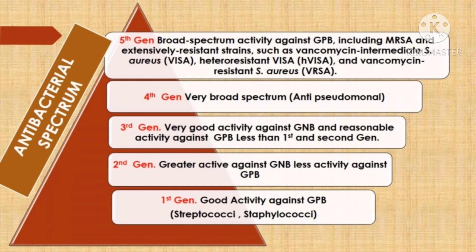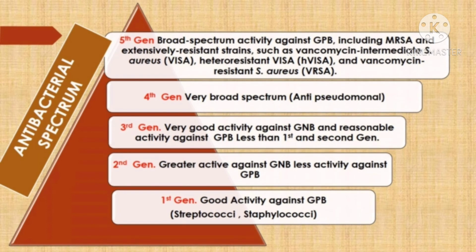Now we will discuss about the antibacterial spectrum of various generations of cephalosporins. The first generation cephalosporins have good activity against gram-positive bacteria like streptococci and staphylococci. Second generation cephalosporins have greater activity against gram-negative bacteria and less activity against gram-positive bacteria. Third generation cephalosporins have very good activity against gram-negative bacteria and reasonable but lesser activity against gram-positive bacteria than first and second generation.